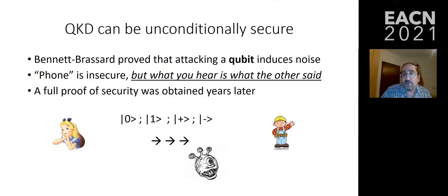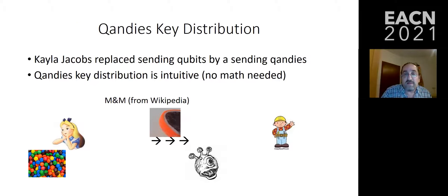We also need the classical phone here, which is insecure but cannot be modified — whatever is sent classically, Bob receives correctly. Alice sends a zero, one, plus, or minus, and later she tells Bob what basis she chose. Similarly in quantum candies, Alice sends a quantum candy, and later only tells Bob whether she used color or taste. If Bob has a quantum memory, he gets 100% of the information. Without one, he must decide before Alice tells him — he might look and see red, and if Alice sent a color, they share a common bit. They lose half the bits this way.